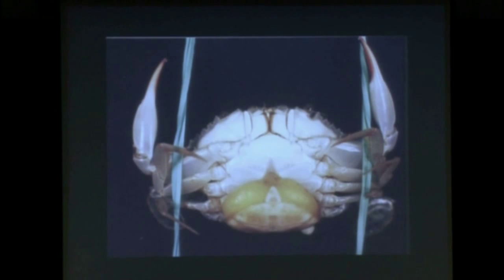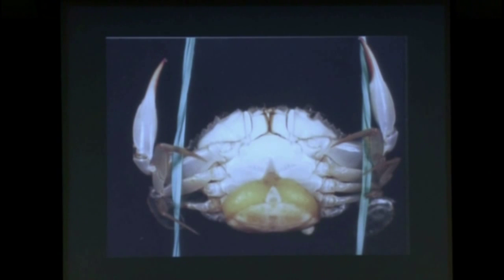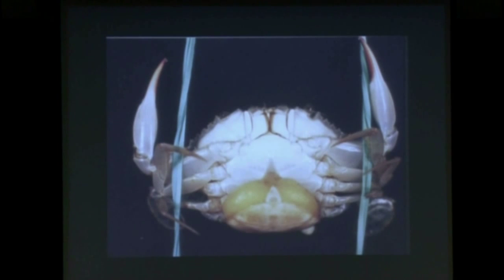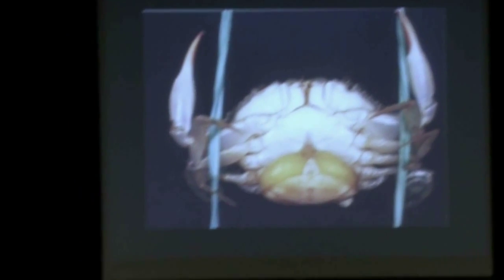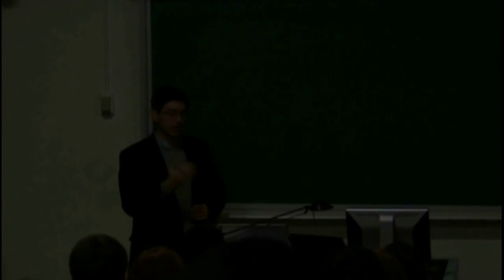Sacculina doesn't just fill up its host — it actually alters the host's behavior. If you're a crab and you get infected with sacculina, you get castrated. You are sterilized. You lose the opportunity to lay your own eggs. The parasite hijacks and shuts down your reproductive system. Why would it do that? Because why should the host be wasting energy building eggs or finding a mate when it could be feeding the parasite? The parasite hijacks the physiology of the crab.